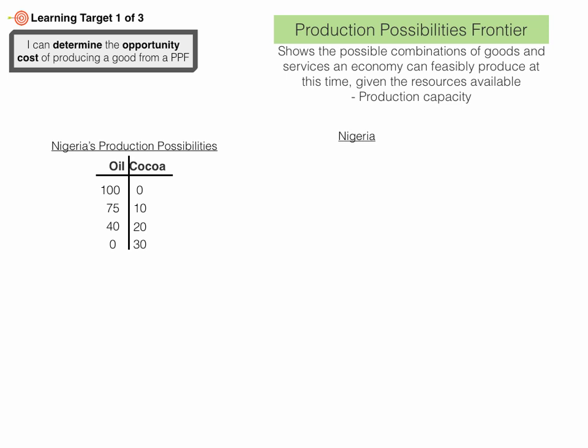Remember, the resources are the factors of production — the inputs, the land, labor, and capital that go into making goods and services. A PPF represents production capacity for a nation at this point in time, given the resources that they have.